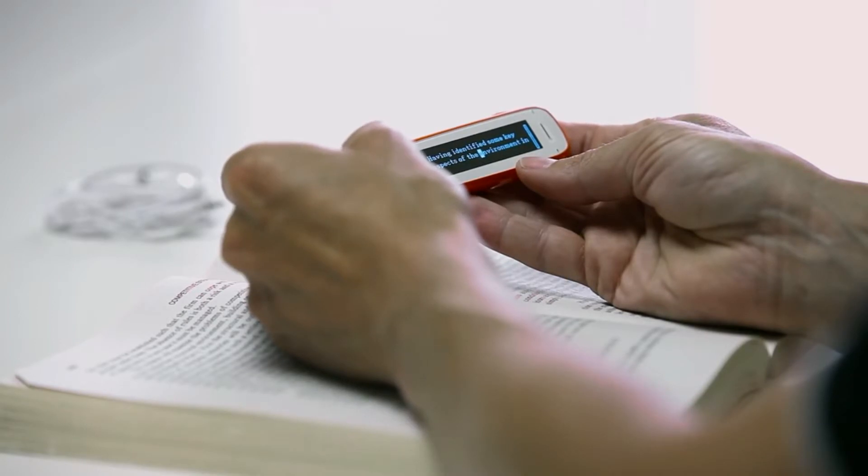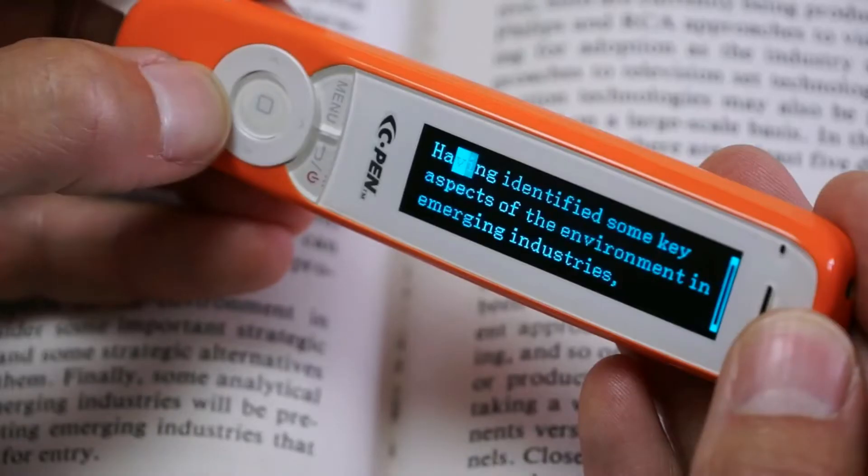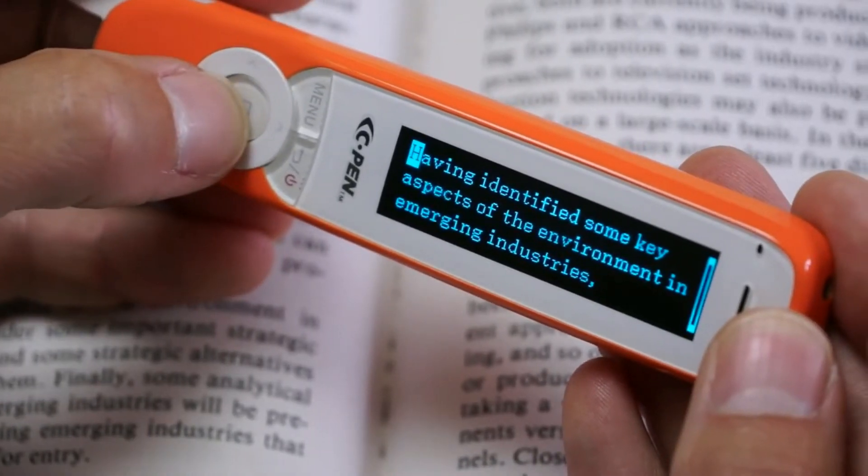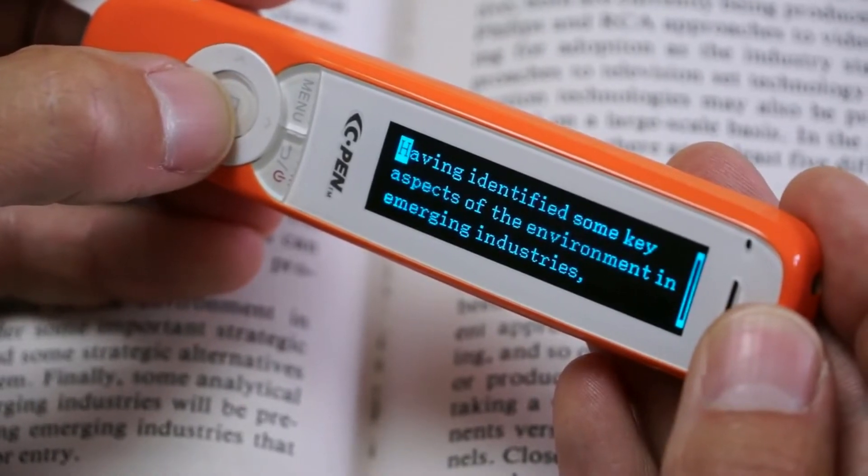To re-listen, move the cursor to a starting point and press the OK button. Having identified some key aspects of the environment in emerging industries.